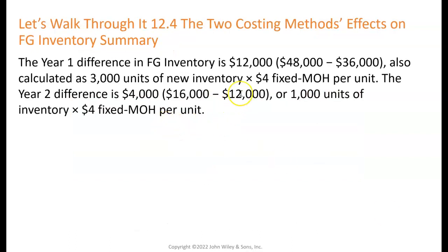The year one difference is $12,000 — that's 3,000 units times $4 of fixed manufacturing overhead per unit. You're going to have to reconcile the differences in operating income between absorption and variable costing, and that difference is going to be the 3,000 units of inventory at $4 per unit. The year two difference is $4,000 — 16 minus 12 — or 1,000 units times that $4 fixed manufacturing overhead rate per unit.